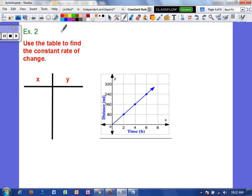Alright, example 2. Use the table to find the constant rate of change. So here we don't actually have the values for x and y, but we're going to use the table to determine that. So our very first point is at the origin. That's 0, 0. Then we have a point at x equals 2 and y equals 80. We then have a point where x equals 4 and y equals 160. And we have a point where x equals 6 and y equals 240.